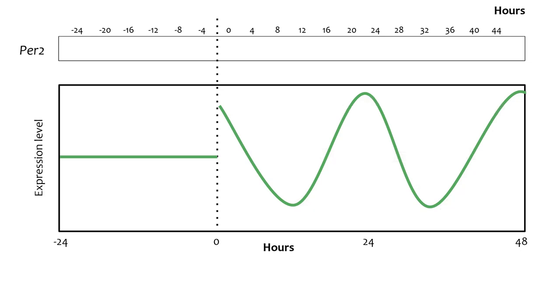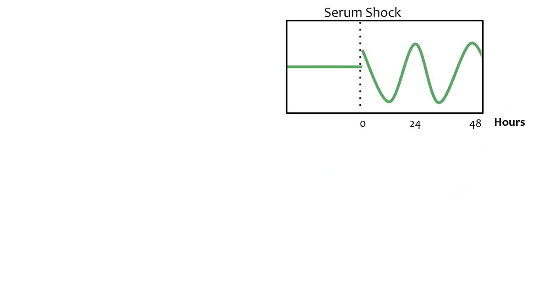Taking into account that each single time point comes from a culture dish with tens of thousands of cells, researchers came up with two different hypotheses to explain their results. The first hypothesis, called induction, is the idea that individual cells are not rhythmic and only begin to cycle after their clocks are started by the serum shock.